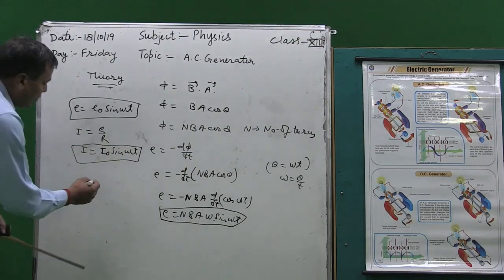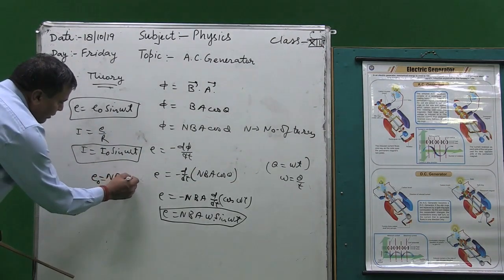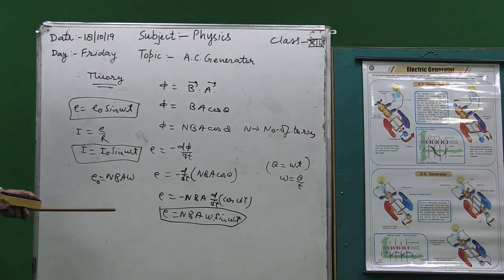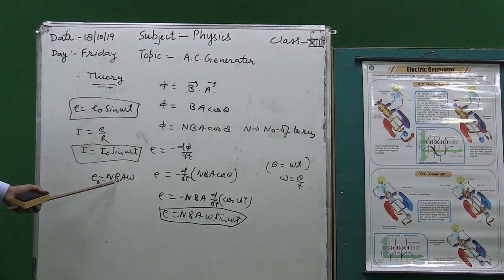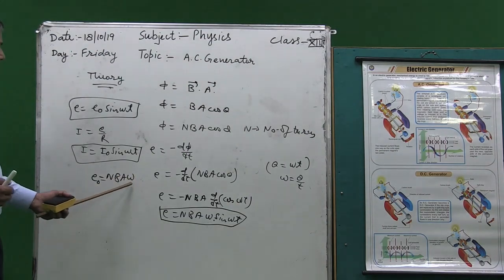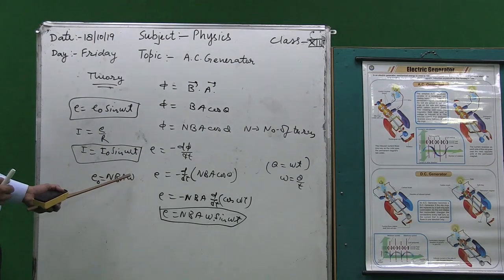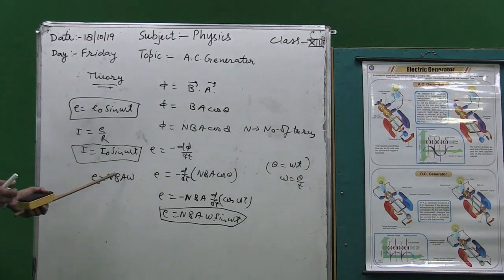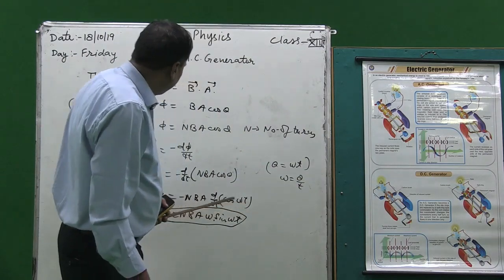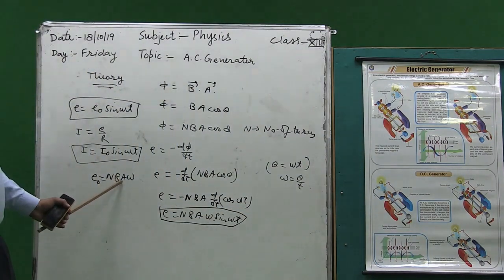Here E₀ equals N B A omega. If we want to increase the induced EMF — that is, if we want a large voltage — then N should be large in the rectangular coil, B should be large (meaning a strong magnet should be used), A is the area of the rectangular coil, and omega is the angular velocity of the coil. If angular velocity increases, the induced EMF and induced current also increase. So for a high-voltage AC generator, N, B, A, and omega should all be large.